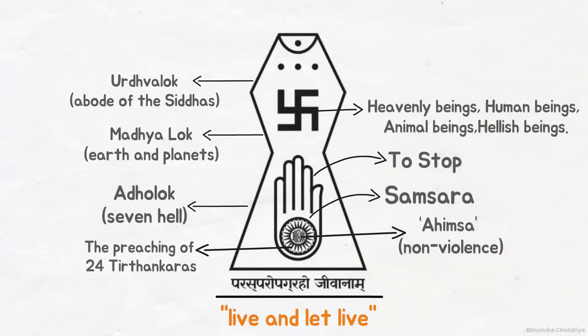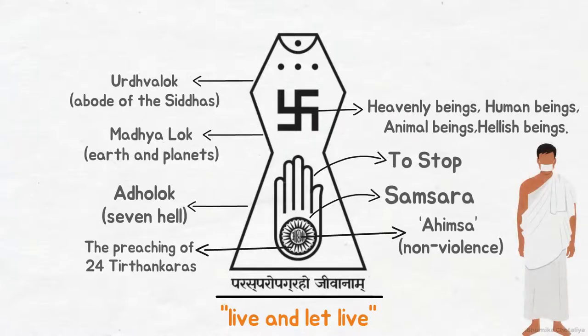Our aim should be liberation. The swastika reminds us that we should become the pillars of the fourfold sangha, that is the sadhu, sadhvis, shravak, and shravikas. First we should strive to be true shravaks or shravikas, and when we can overcome our social attachments, we should renounce worldly life and follow the paths of the sadhu and sadhvis to be liberated.